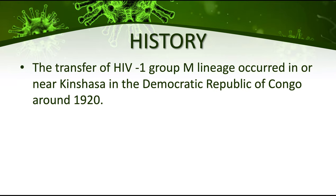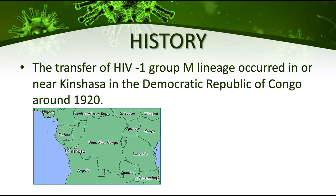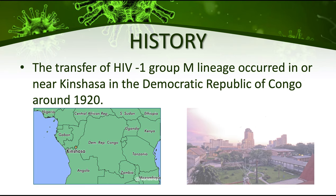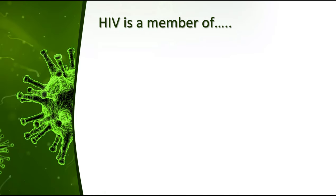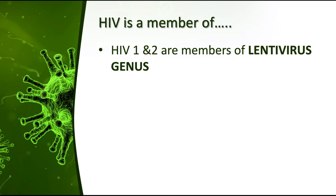The transfer of HIV-1 Group M lineage occurred in or near Kinshasa in the Democratic Republic of Congo around 1920. It was believed that even around the 1920s, HIV was already being passed on to humans from animals. HIV is actually a member of the genus Lentivirus, or Lentiviridae, and both HIV-1 and HIV-2 are members of that genus.